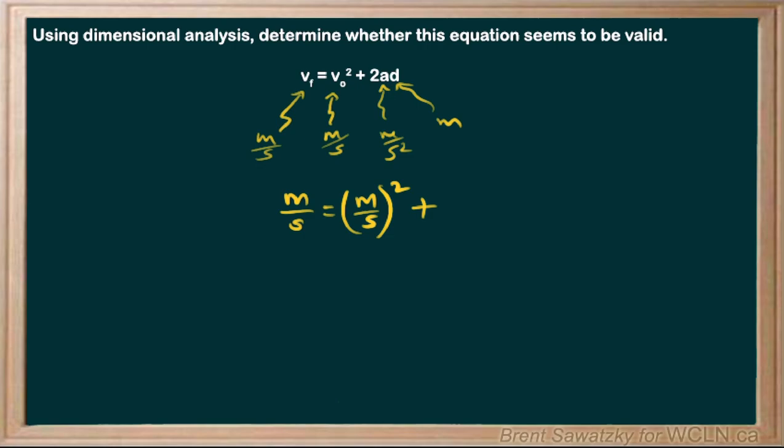But that velocity is squared. And then we can forget about the two when we're just analyzing the units. The acceleration would be meters per second squared. And the displacement is meters.